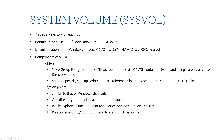Components of SYSVOL include folders and junction points. Folders store Group Policy Templates, also known as GPTs, and are replicated as SYSVOL containers, also known as GPCs, via the Active Directory replication process. Folders also contain scripts — especially startup scripts — that are referenced in a GPO, also known as a Group Policy Object, or through an Active Directory user profile.